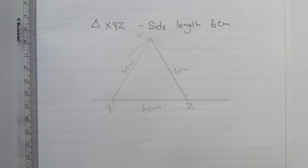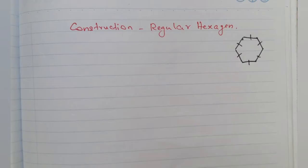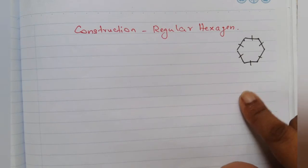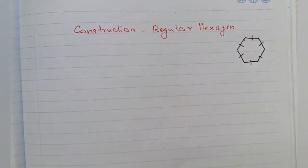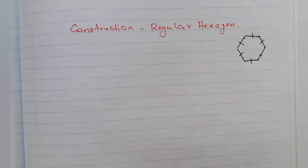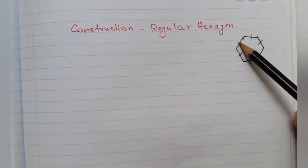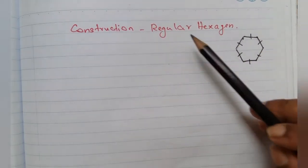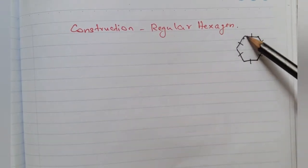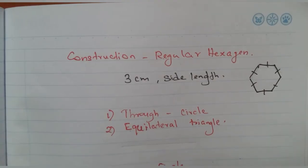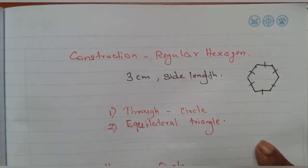The next topic is constructing a regular hexagon. A hexagon is a plane figure with 6 sides — a triangle has 3 sides, a quadrilateral has 4 sides, and a hexagon has 6 sides. A regular hexagon means all 6 sides are equal in length. Now we will look at the two methods for drawing a regular hexagon.